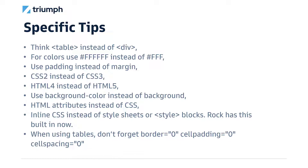Your colors have to be six digits of hex, not three. Use padding instead of margins. Use CSS version 2 instead of CSS version 3. HTML 4 instead of 5. Use background colors instead of just background. Use HTML attributes — meaning inline style tags — instead of CSS classes. Don't have a style block at the top; you need to inline that CSS down to every element. Good news: Rock has CSS inlining built in — you just need to enable it on your transport.